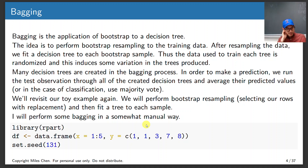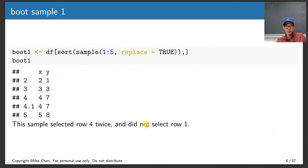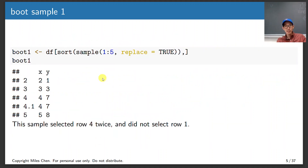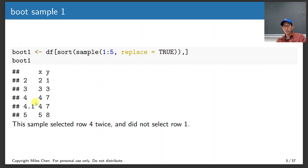Here's an example of manual bagging. The original data frame has X as 1, 2, 3, 4, 5 and Y values of 1, 1, 3, 7, 8. When I sample with replacement — which is what bootstrapping is — instead of getting 1, 2, 3, 4, 5, I get 2, 3, 4, 4, 5, ending up sampling the observation at 4 twice.